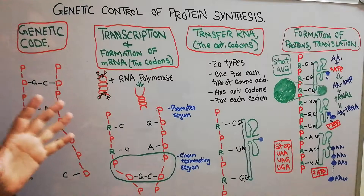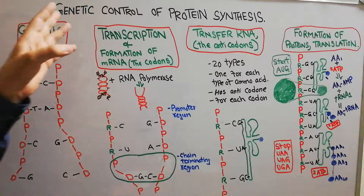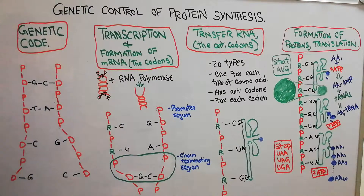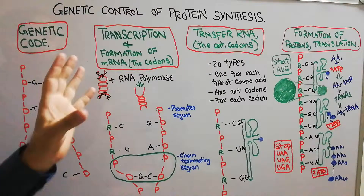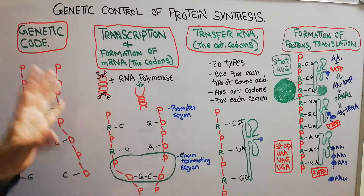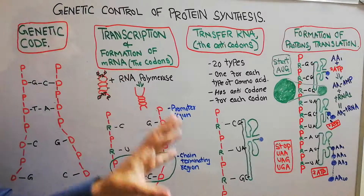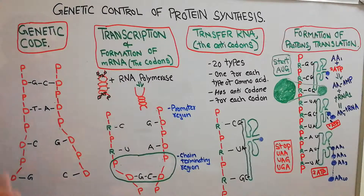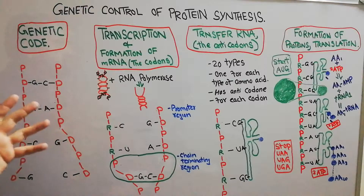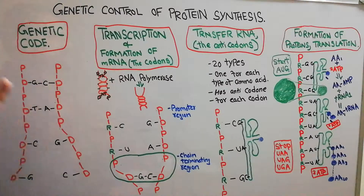Today we are going to discuss the genetic control of protein synthesis — how proteins are formed inside the cell and how their formation or synthesis is being controlled by the genes present in the DNA, or deoxyribonucleic acid. In the last lecture we discussed that inside the cell there is a nucleus.